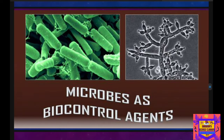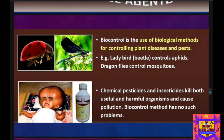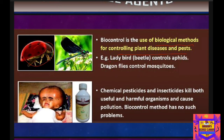Next, we will learn about microbes that can be utilized as biocontrol agents. Biocontrol means using biological methods for controlling plant diseases and pests. For example, the ladybird beetle is used to control aphids — an insect that eats leaves. Dragonflies can eat the eggs of mosquitoes and control them.